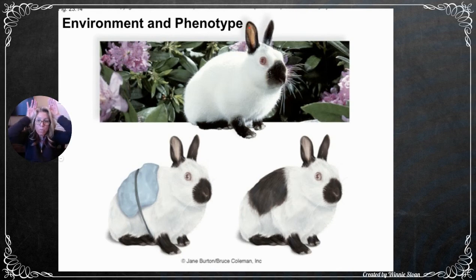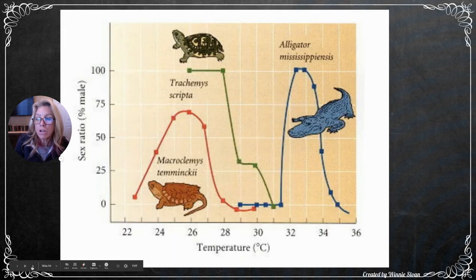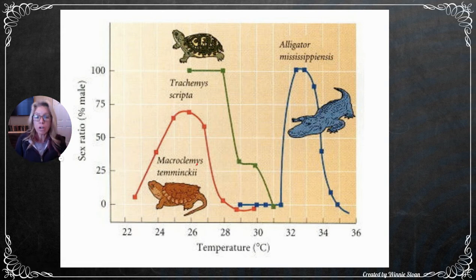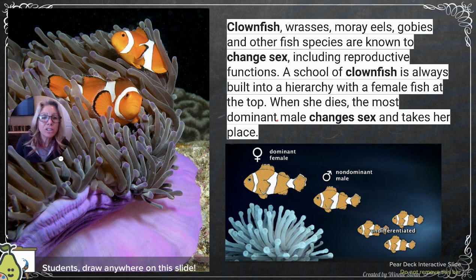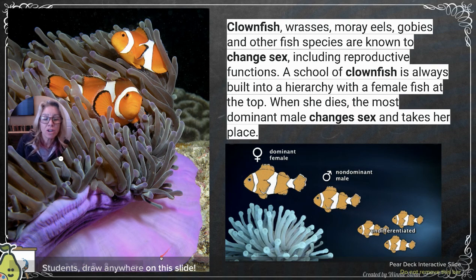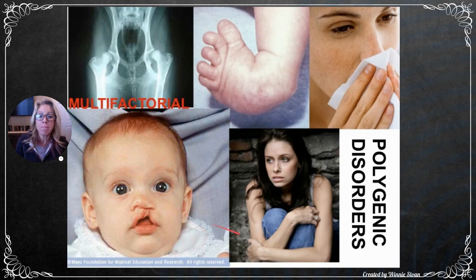An example of environmental influence: Himalayan rabbits. When the back of a Himalayan rabbit was shaved and an ice pack applied, the hair grew back black — the environment influenced hair color. This is adaptive: the coldest parts of the body (feet, ears, nose) are dark to absorb more light wavelengths and increase heat, while white reflects light. Similarly, sex in certain reptiles is determined by nest temperature, and clownfish can literally change their sex — the most dominant female's role is taken over by the dominant male after she dies.